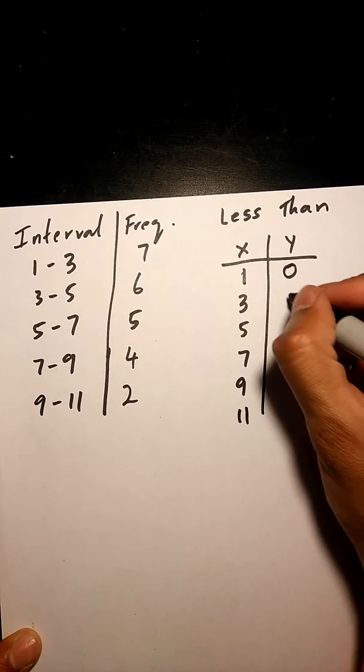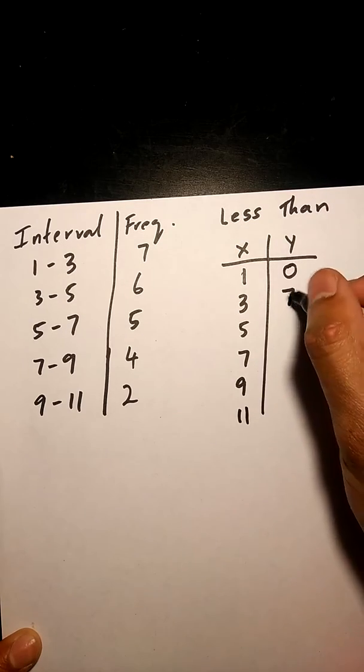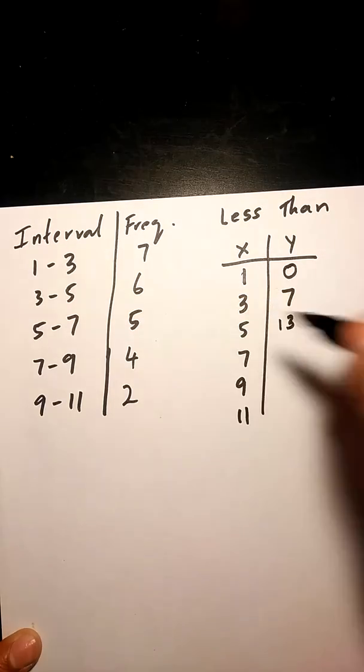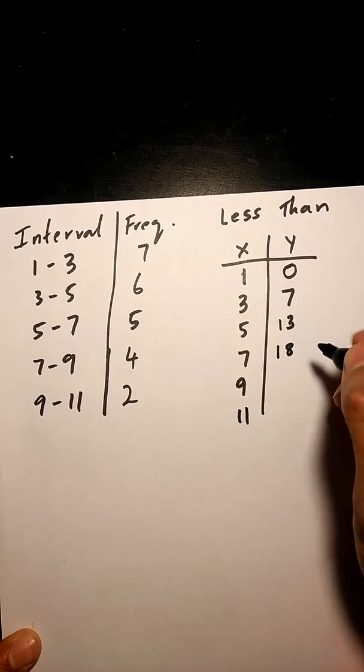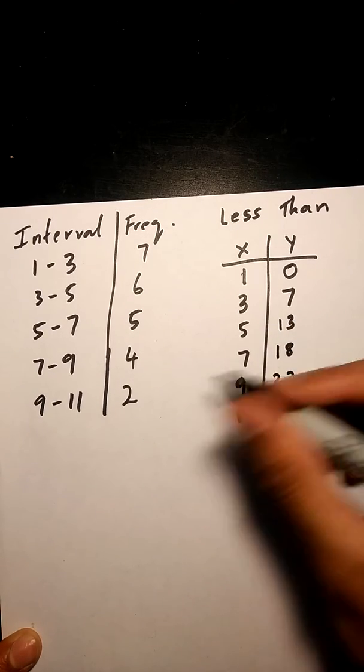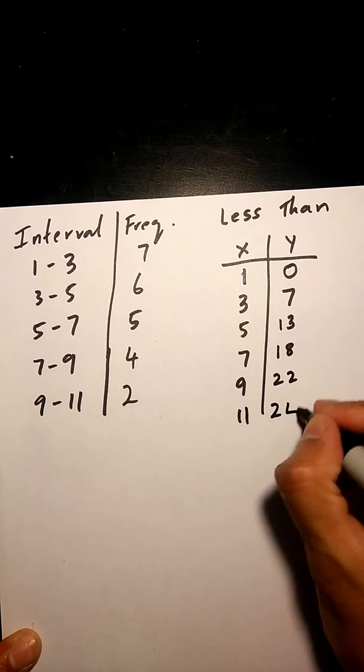So 0 plus 7, 7. 7 plus 6, 13. 13 plus 5, 18. 18 plus 4, 22. 22 plus 2, 24.